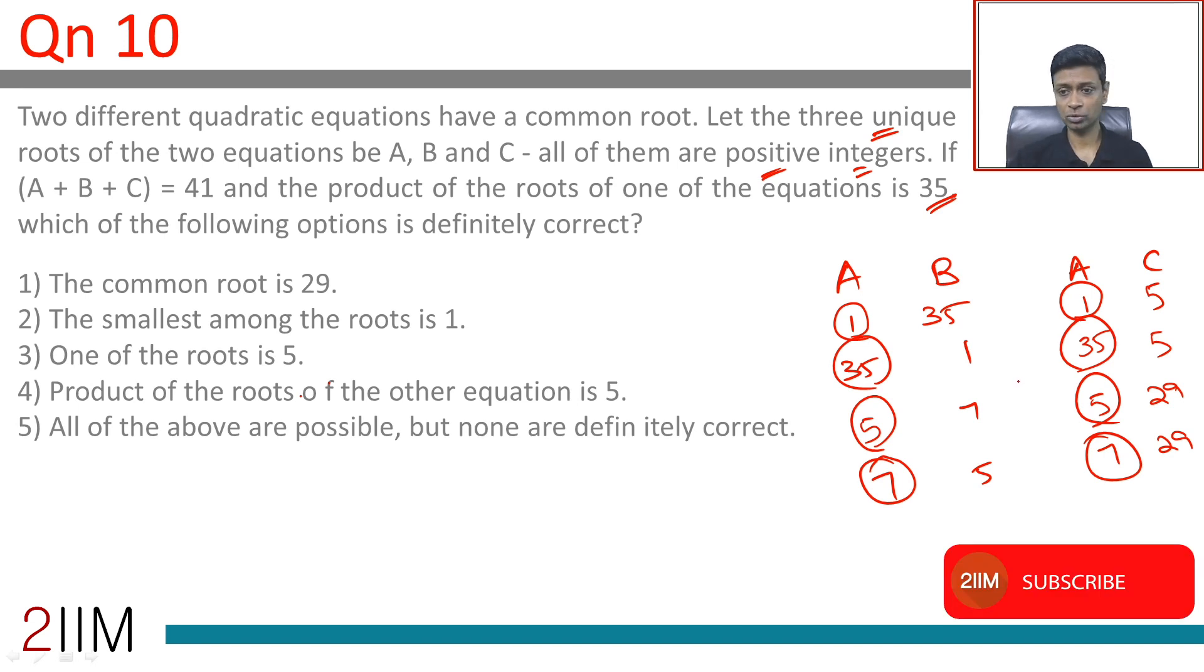Now let's go to the choices. The common root is 29? Not necessary. Common root is not 29 - it could be 1, 35, 5, or 7. The smallest among the roots is 1. So in this case it is 1, in this case it is 1, in this case it is...